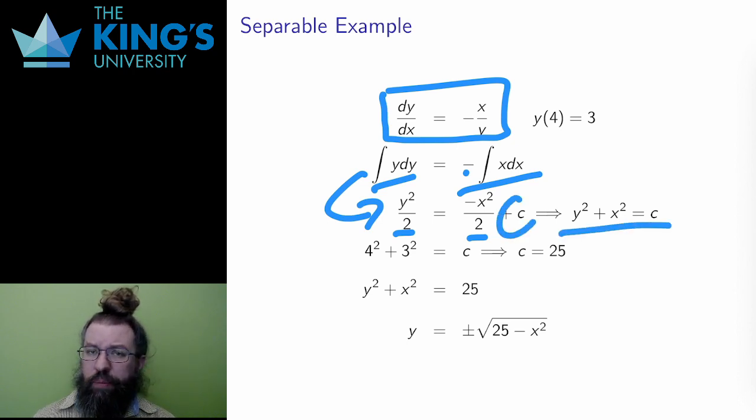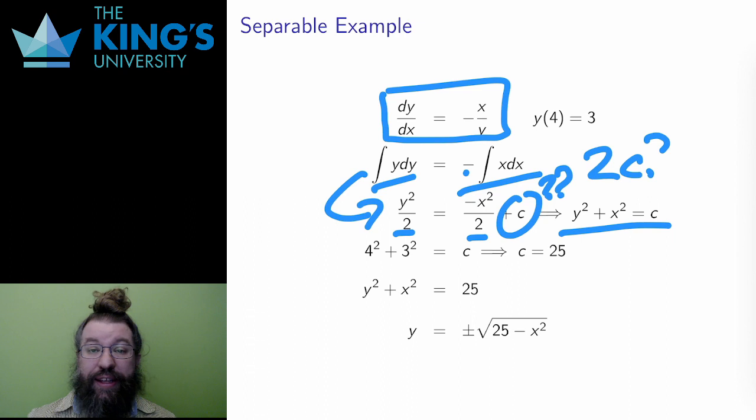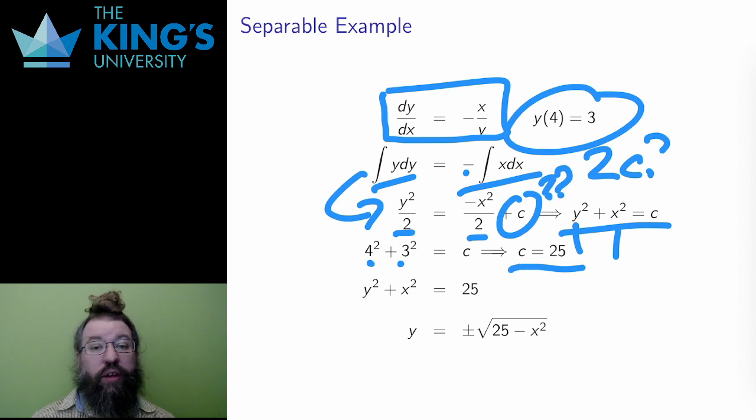You might wonder, if I multiply by 2, isn't this 2c? Well, since c is a constant that I need to figure out later, I actually don't really care if it's c or 2c here. It's habit, even though it's a bit lazy, to sort of fold multiplications or additions by other constants into c and just write c. Then I use the initial condition. Y = 3 when x = 4. Putting those into this lets me conclude that c = 25, so the equation is y² + x² = 25.